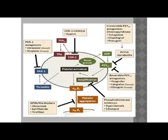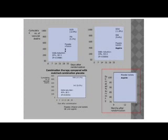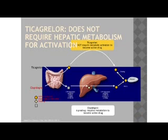Aspirin is comparable to streptokinase in reducing the number of vascular deaths, and using both together has additive effects. Ticagrelor is the newer drug — a P2Y12 inhibitor in the same group as clopidogrel. Unlike clopidogrel, which is an inactive prodrug requiring cytochrome P450 for conversion to its active metabolite, ticagrelor does not require this mechanism. Therefore, it tends to be more potent and faster-acting than clopidogrel. Because of this activation requirement, you sometimes have non-responders to clopidogrel.